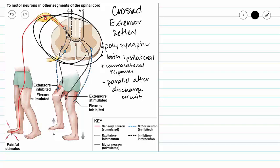You can see we have a lot of neurons involved here, and so we have many synapses. We are going to have responses on our ipsilateral side and on our contralateral side.